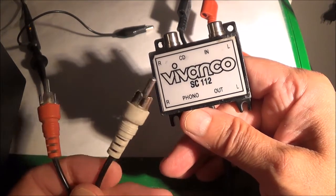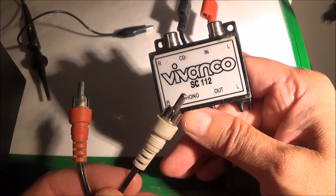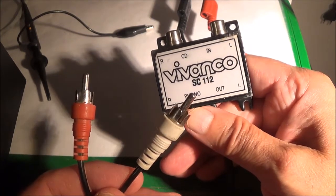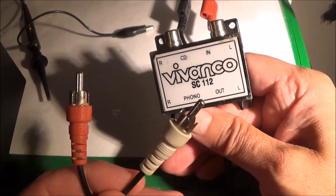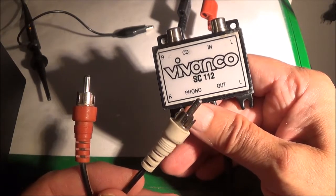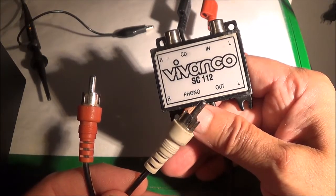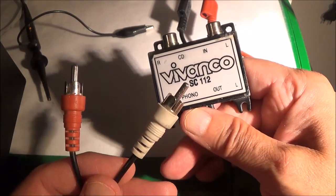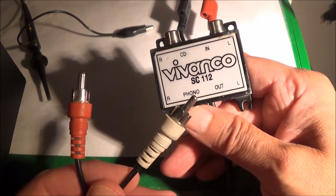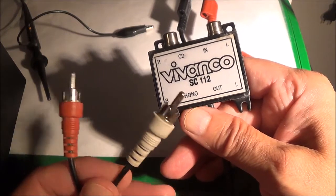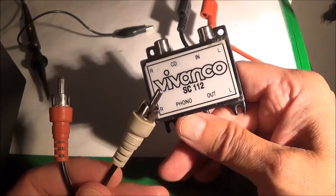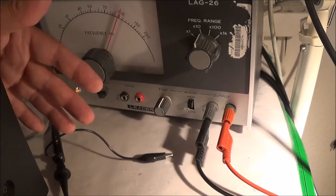When it goes through the phono preamp section of your radio or stereo receiver amplifier, what happens is the opposite thing. The bass gets boosted and the treble is dropped down. The treble is attenuated, the highs are attenuated is what I'm trying to say.